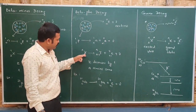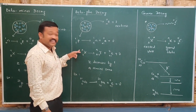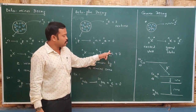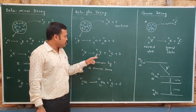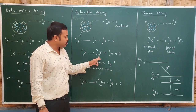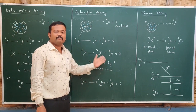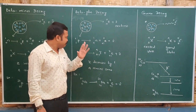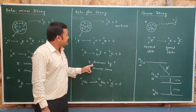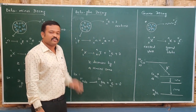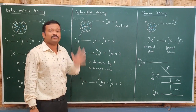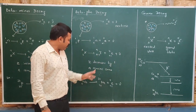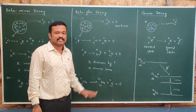Taking the general parent nucleus X(Z, A), when a positron with charge plus 1 and mass 0 is emitted, the atomic number of the daughter nucleus becomes Z−1 to balance the equation, while the mass number remains A. So whenever beta plus decay takes place and a positron is emitted, the atomic number decreases by one and the mass number remains the same.